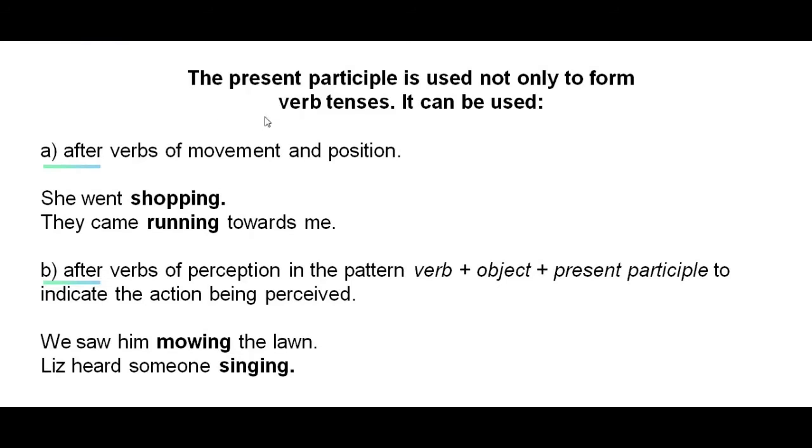Now the present participle is used not only to form verb tenses, it can also be used after verbs of movement and position. For example, she went shopping. After a verb of movement and position: went. They came running towards me. After a verb of movement and position again: came.